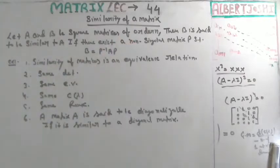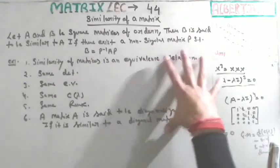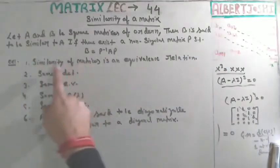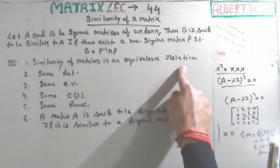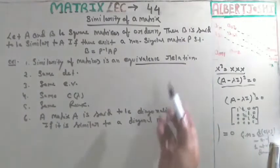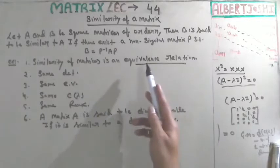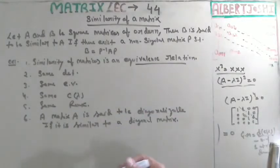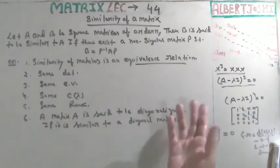There are some conditions that are very important and are also asked in examinations. The first one is that similarity of matrices is an equivalence relation. You must recall from the previous lecture on relations — we have already discussed equivalence relations, symmetric property, and transitivity property. These properties will hold.